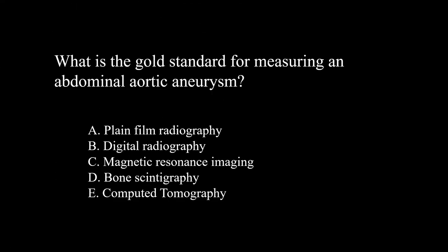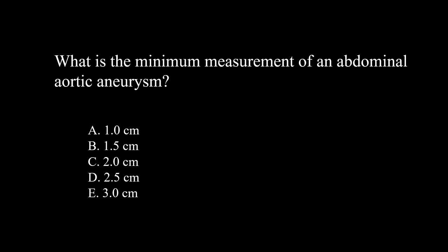Time for a couple of questions. What is the gold standard for measuring an abdominal aortic aneurysm? That would be computed tomography, or CT — though ultrasound would also have been a good choice. What is the minimum measurement of an abdominal aortic aneurysm? The best answer is 3.0 centimeters.